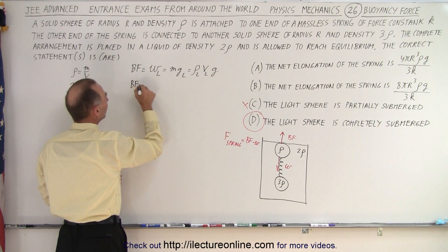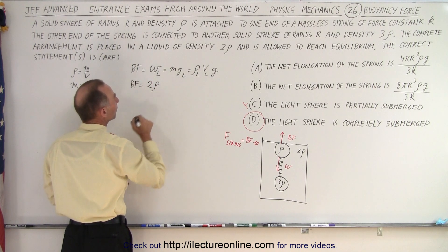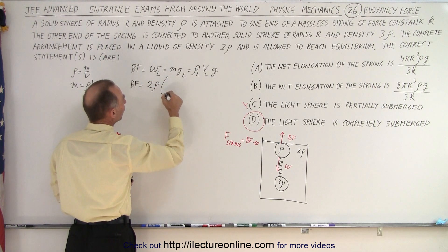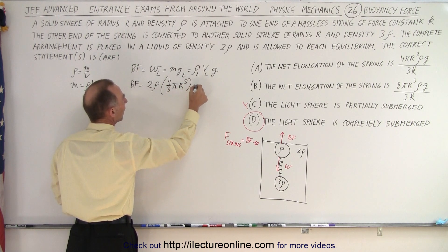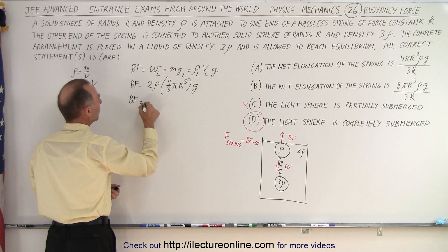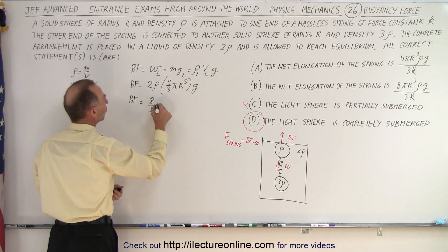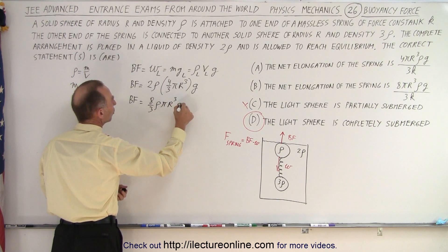So the buoyancy force is equal to the density of the liquid, which is going to be 2 times rho, the volume of the sphere, which is 4 thirds pi r cubed, and g. That's the buoyancy force. So the buoyancy force can be calculated to be 8 thirds density rho pi r cubed g.